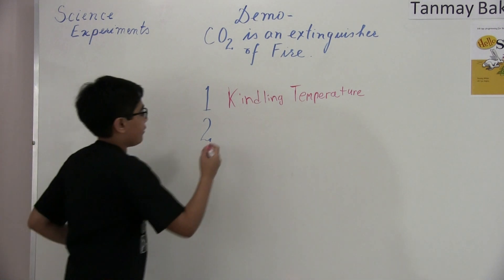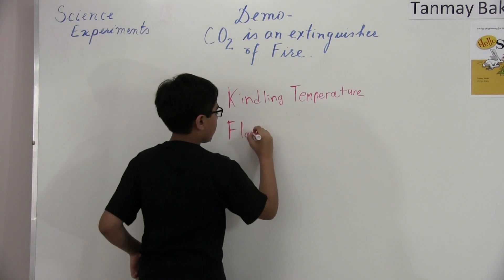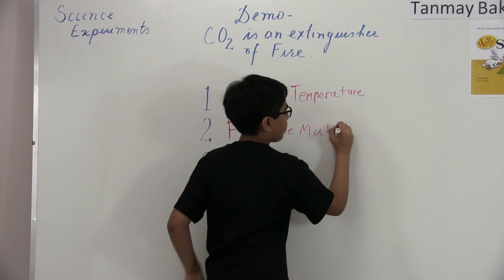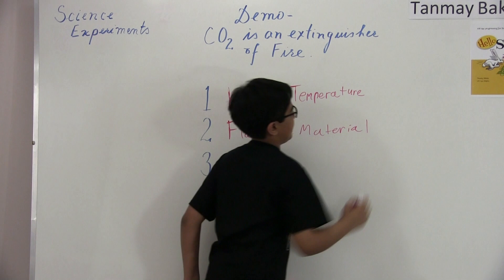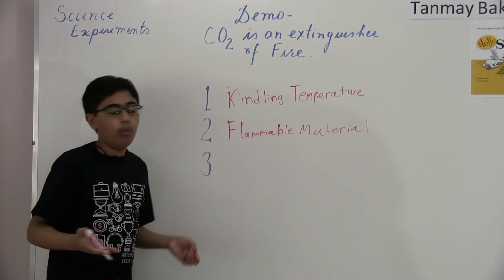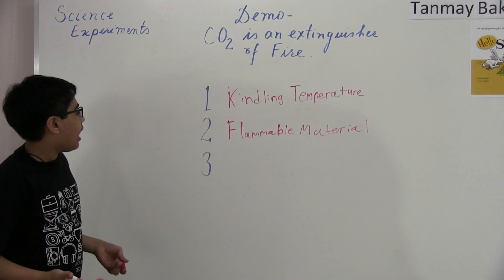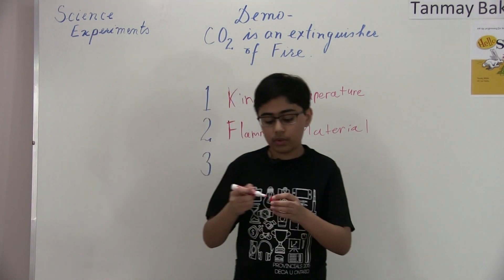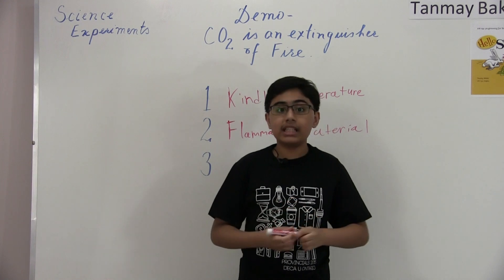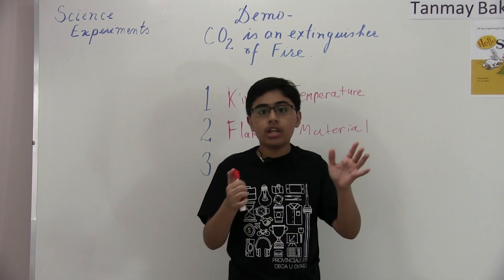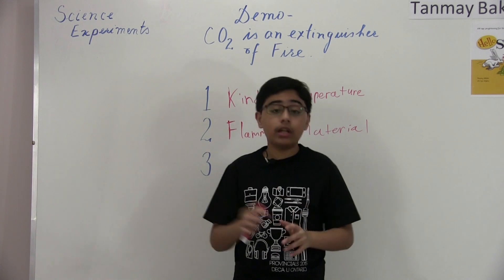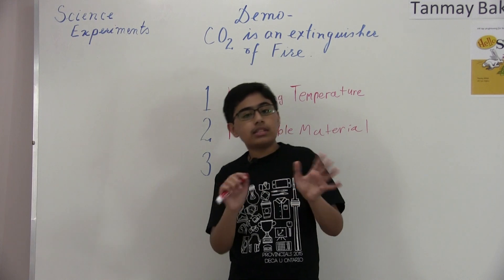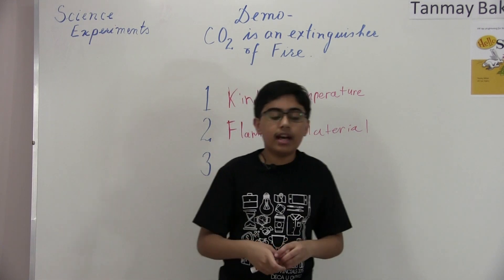The second thing you need is a flammable material. This can be really anything like wool, wood, or propane. Different substances actually burn with different colors — for example, burning wood, because of all its carbon, burns a yellowish-blackish color, and propane lights as a bluish, almost colorless flame. Different substances burn with different flame colors.